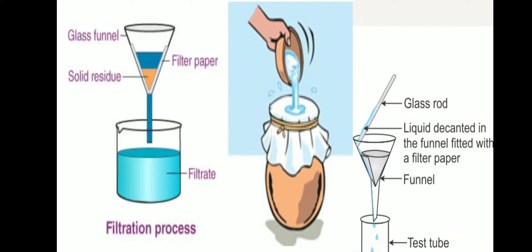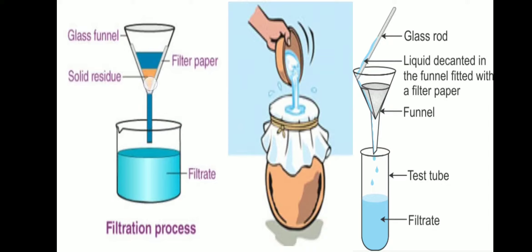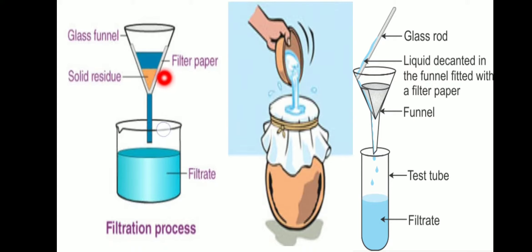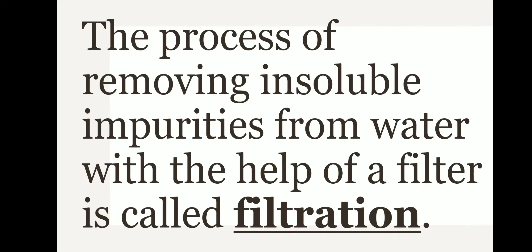Now let us see the next process of purification of water from insoluble impurities — that is filtration. A glass funnel, filter paper, or a thin cotton cloth is used. Impure water is poured into it, and slowly the clear water gets collected into a beaker, while the insoluble impurities remain in the filter paper or cotton cloth as residue. The process of removing insoluble impurities from water with the help of a filter is called filtration.